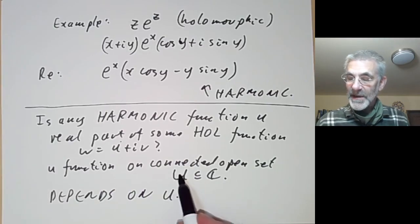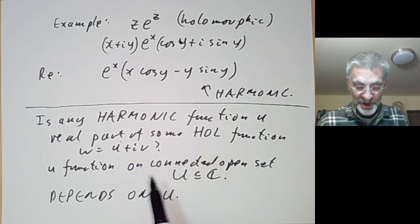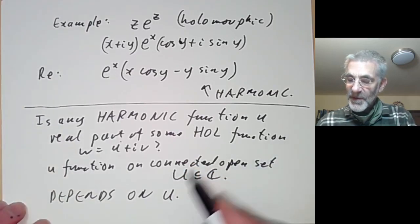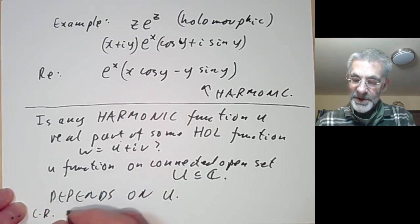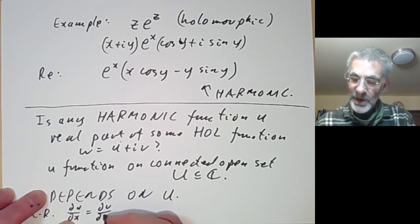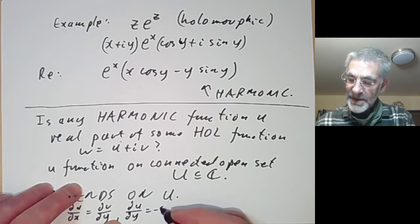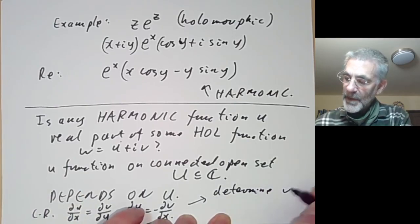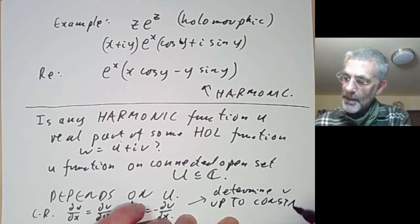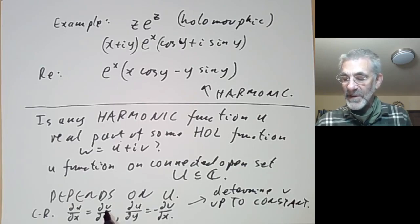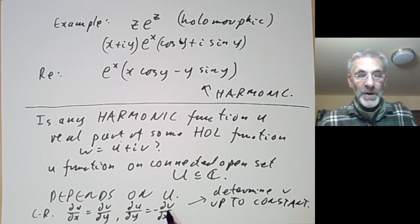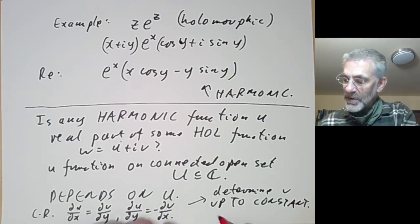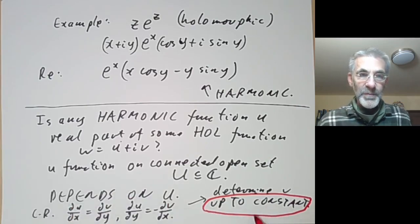For some open sets U, every harmonic function is the real part of a holomorphic function; for others it's not true. We're trying to solve the Cauchy-Riemann equations: du/dx = dv/dy and du/dy = -dv/dx. Notice these determine v up to a constant, because if both partial derivatives of v vanish, then v must be constant. This lack of uniqueness is going to cause quite a few problems later on.